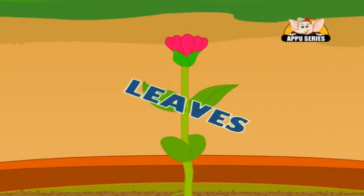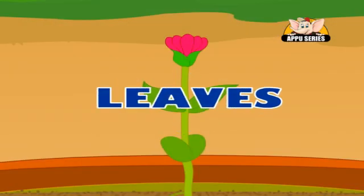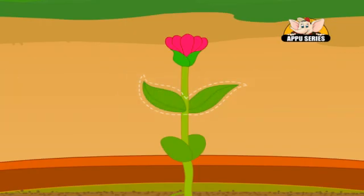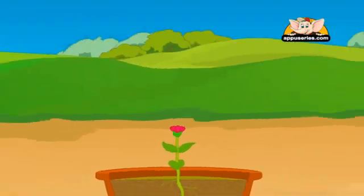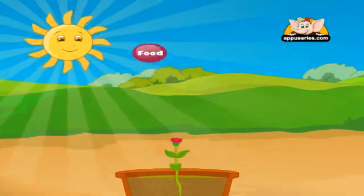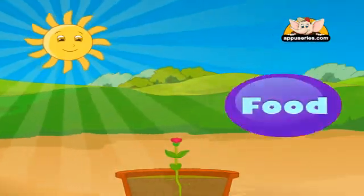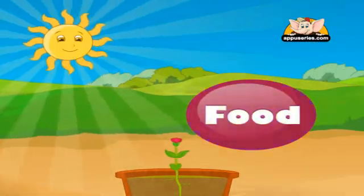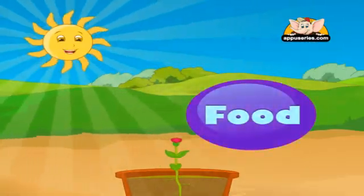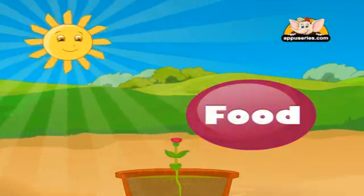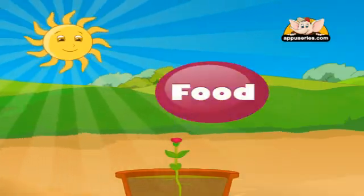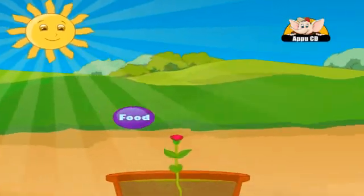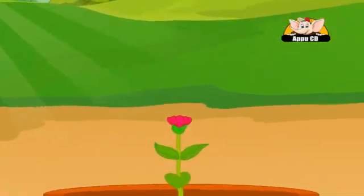Leaves: Most of a plant's food is made in its leaves. Leaves are designed to capture sunlight, which the plant uses to make food through a process called photosynthesis.